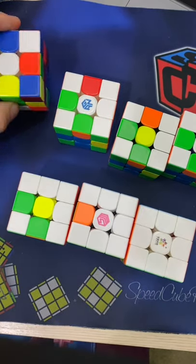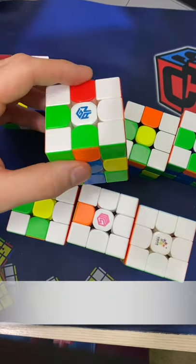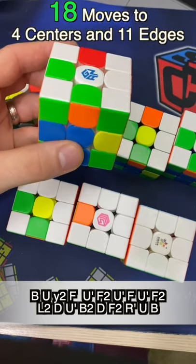Now I started with this lovely scramble and in 18 moves I solved all the corners leaving me four centers and 11 edges.